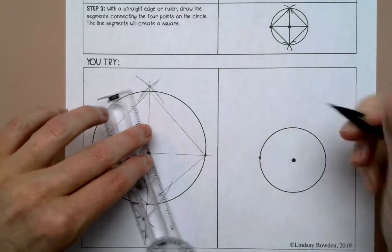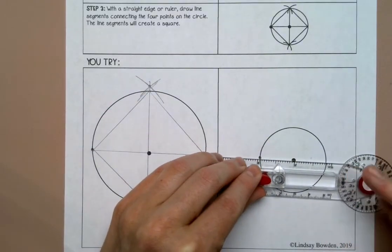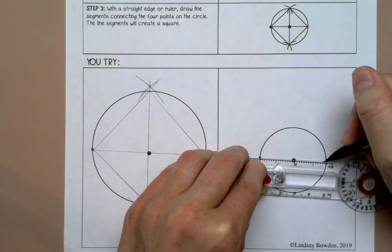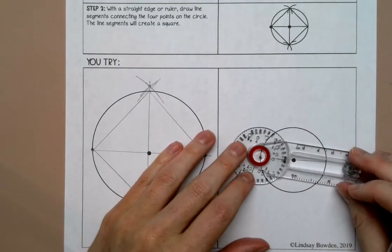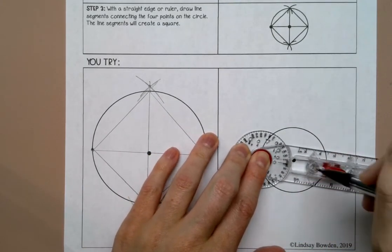All right, so let's see how we did. I'm going to draw my diameter. I'm going to draw a perpendicular bisector.